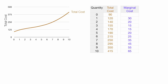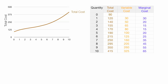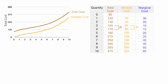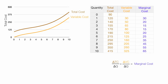I'm going to put the variable cost column back in to show you something interesting. If you look at the change in total cost and the change in variable cost, it's always the same. In the earlier video, I showed you where the slopes of the total cost and variable cost curves are the same — this actually proves it numerically. So it turns out that the change in total cost is equal to the change in variable cost. Therefore, the change in total cost divided by the change in quantity is equal to the change in variable cost divided by the change in quantity, and this equals marginal cost.